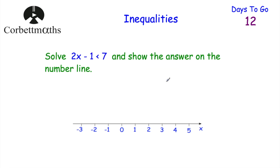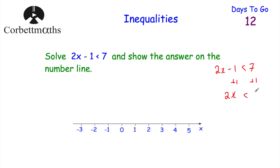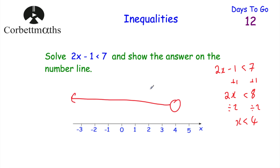Now let's look at questions that involve solving and also representing the answer on a number line. Solve 2x minus 1 is less than 7, then show the answer on a number line. Adding 1 to both sides gives 2x less than 8, then dividing by 2 gives x is less than 4. On the number line: hollow circle at 4 with an arrow to the left.